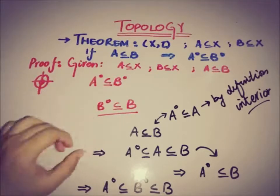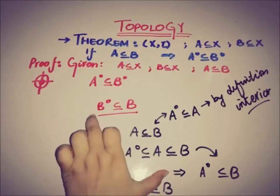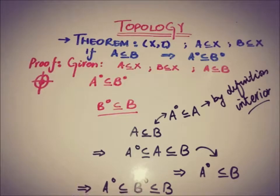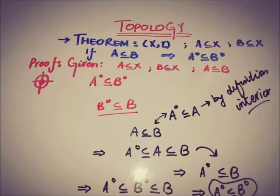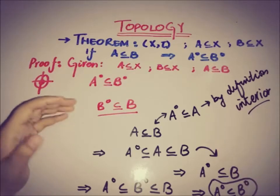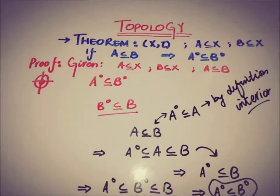By using both statements, we can write that interior of A is a subset of interior of B, which is a subset of B — by just using the fact that A is a subset of B. We have proved that interior of A is a subset of interior of B, using only the definition of the interior point and the relation of the subsets. By using these basic definitions, we have proved this important theorem.